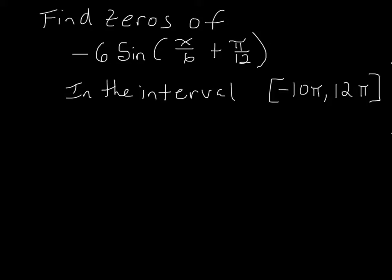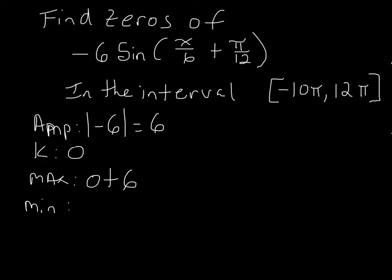So first we need to find all our typical points of interest. We need our amplitude, which is the absolute value of the a term, which is equal to 6. Our k term is zero. So our max occurs at zero plus our amplitude, which is 6. Our min occurs at zero minus our amplitude.